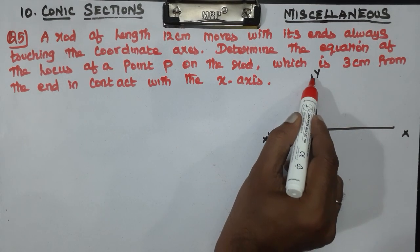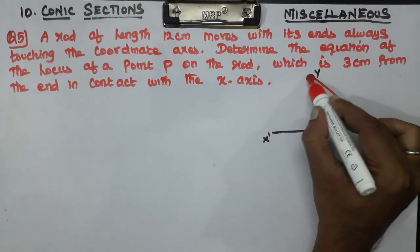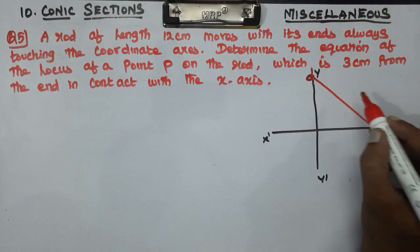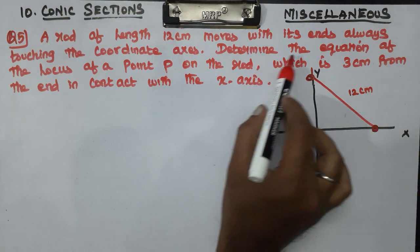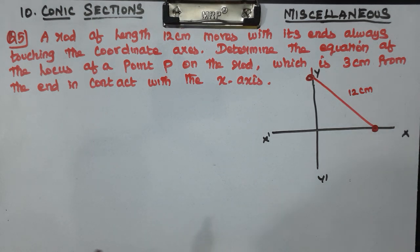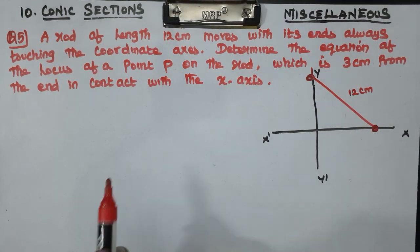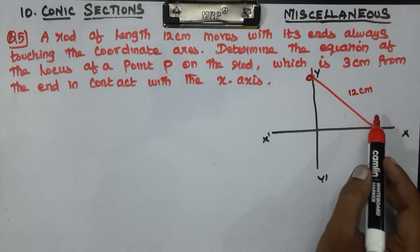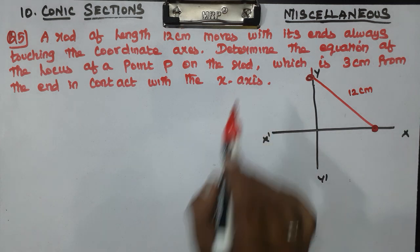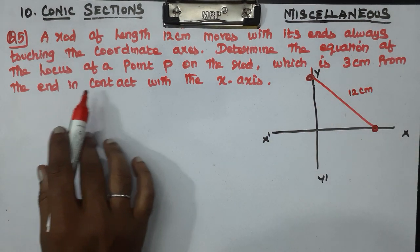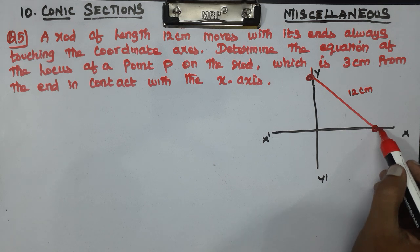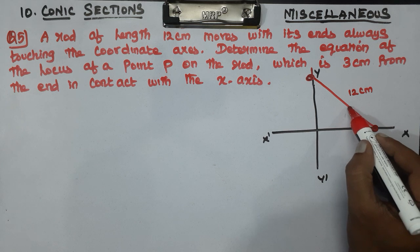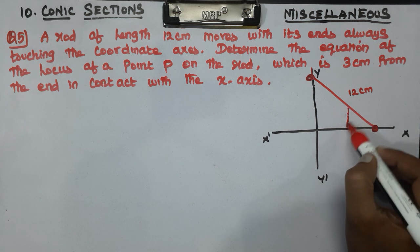Now, one rod with two points touched — we can draw a rod. From the end in contact with the x-axis, in the x-axis contact area, I can take 3 centimeters. So this is 3 centimeters. This line is 3 centimeters.